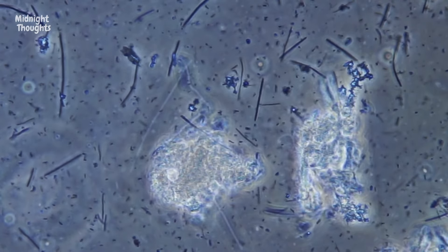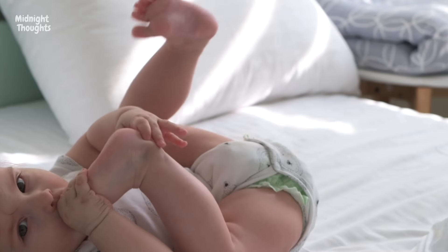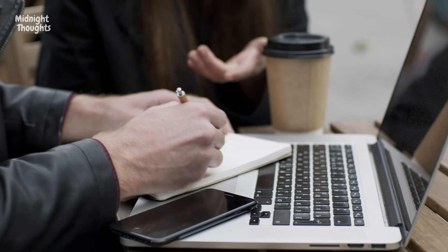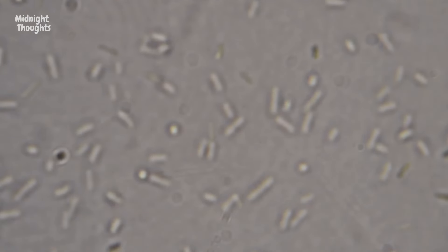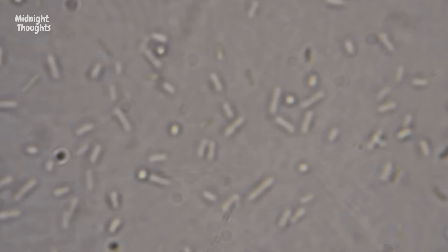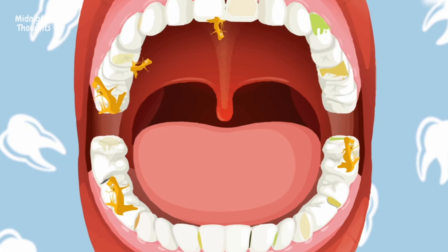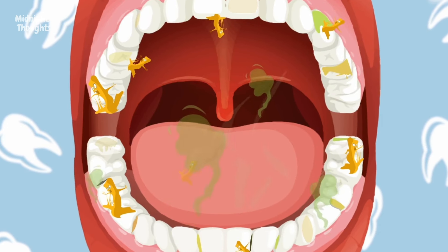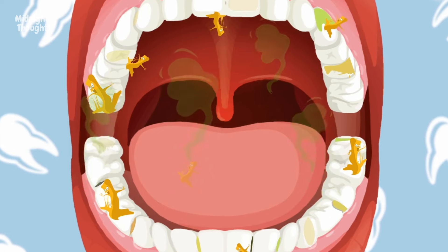Bacteria are present everywhere around us — on our hands, on our bodies, on our clothes, at our desks, on our phones, and almost everywhere. But as long as it's at expected levels, there's no significant harm from it. Along the same lines, the human mouth has many bacteria inside of it. Usually, none of them are particularly harmful, and they naturally coexist with our bodies.